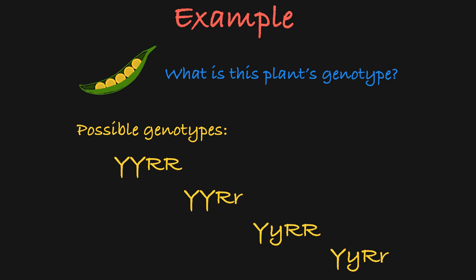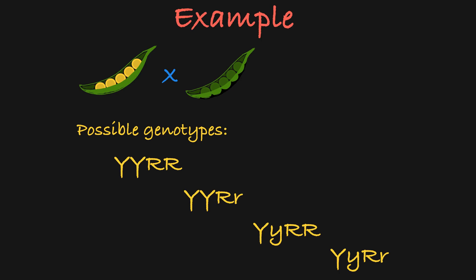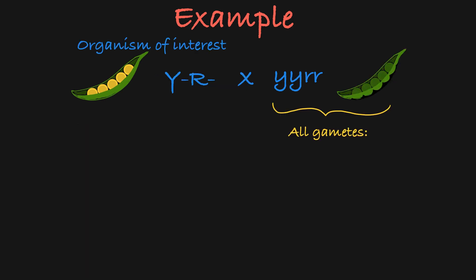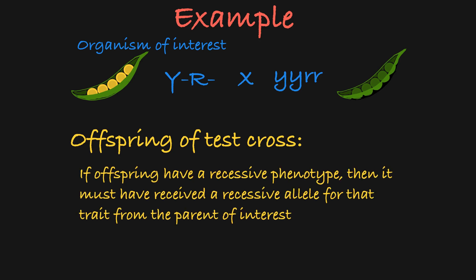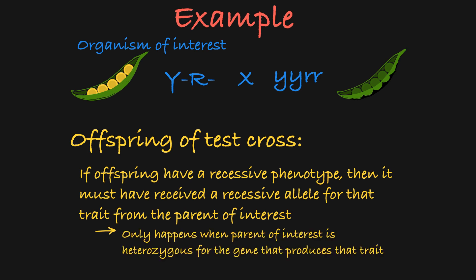To find out which of these four genotypes this pea plant has, we cross it to a plant with green peas and pinched pods, because we know that means that genotype is homozygous recessive for both genes. This plant can only pass on recessive alleles to its offspring. What you are looking for in the offspring is evidence that the parent of interest is passing on recessive alleles. If the offspring have a recessive phenotype for one or both genes, then it must have received a recessive allele from the parent of interest, telling you that the parent is heterozygous for that gene.